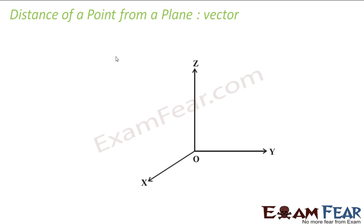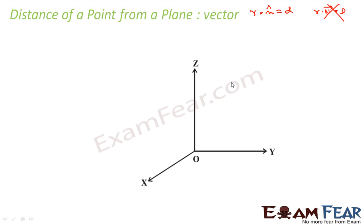Now let's understand a new topic called distance of a point from a plane. Before solving this, let me reiterate: when you say r dot n̂ you get small d — this small d is nothing but the distance of this plane from the center. When you say r dot n vector is equal to d, this d is not the distance of the plane from the center.